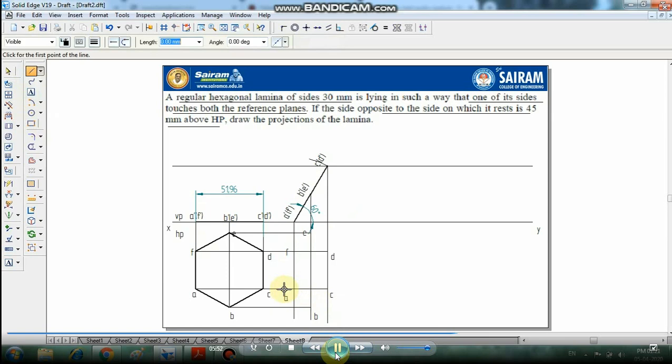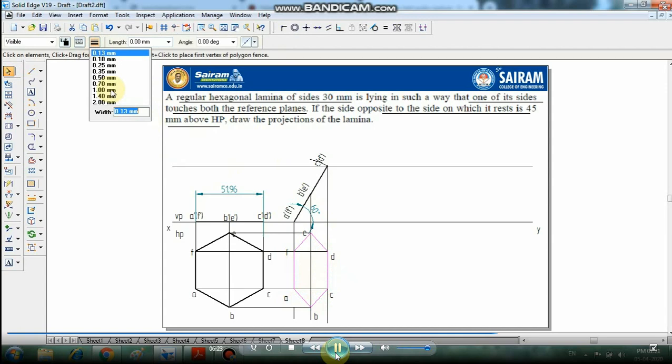Select the line command. Now we have to join this: A, B, C, D. A to B, B to C, C to D, D to E, endpoints. Select the endpoints or intersection points. Now select that and make it as 0.5 mm thickness.